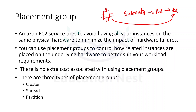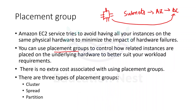To minimize the impact of hardware failure, AWS would try to place all your instances onto different physical hardware. By default, EC2 instances are spread across different physical hardware. But if you want to control how your EC2 instances are placed — for example, when you need low latency between instances — then you can use placement groups to control how related instances are placed on the underlying hardware to suit your workloads.